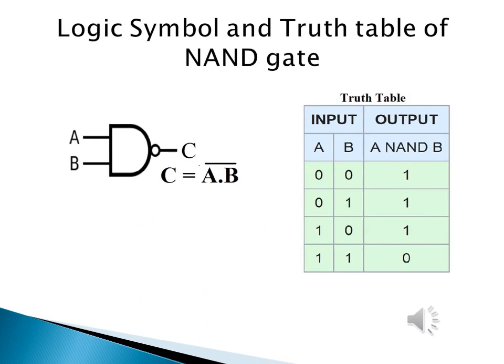We can see the logic symbol of a NAND gate, which is a combination of the AND gate and the NOT gate. The small bubble on the output is the symbol that represents the inversion. The truth table shows two inputs and one output. If both inputs are zero, the output is one. If one input is zero and the other is one, the output is one. If both inputs are one, the output will be zero.